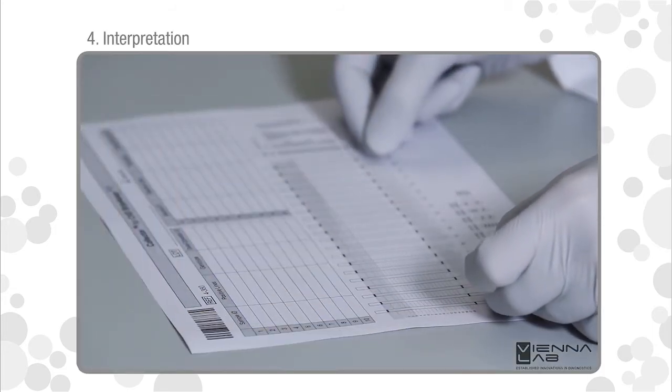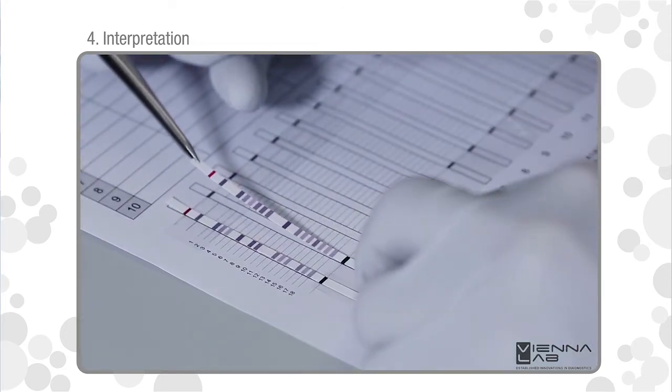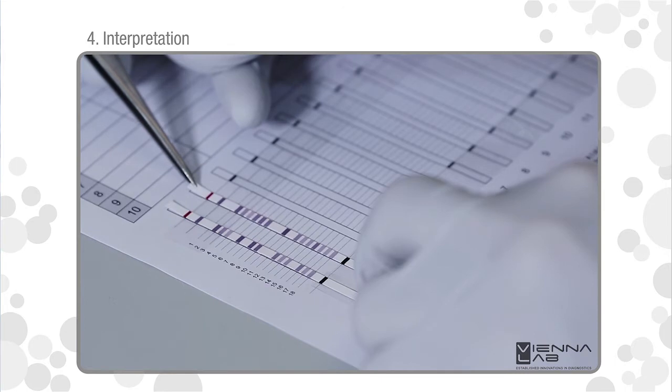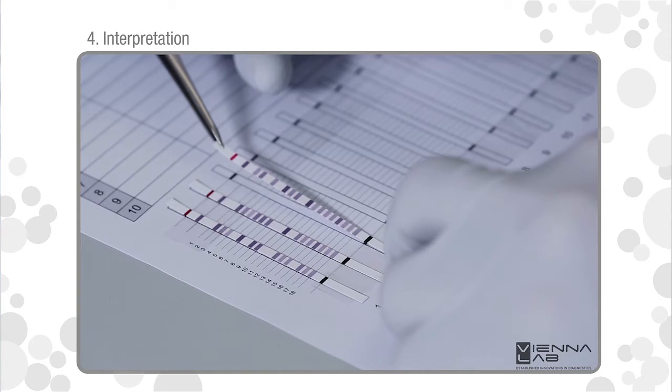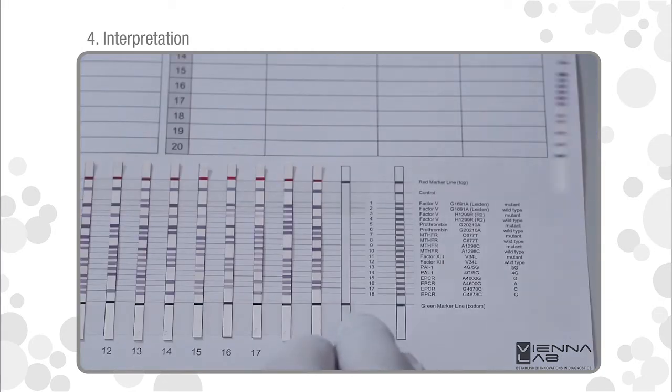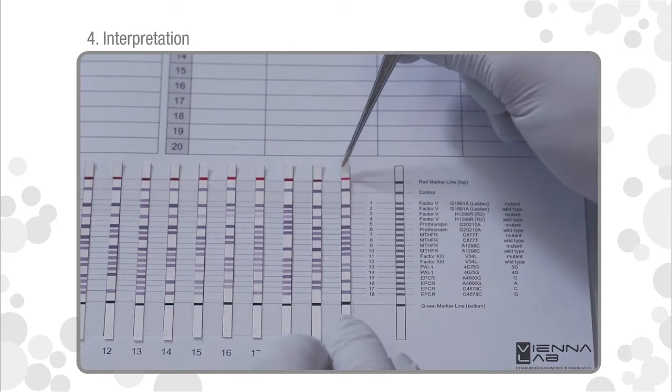Use double-sided tape to fix processed and dried test strips into the designated fields of the collector sheet. Align test strips to the schematic drawing using the red and green marker lines.